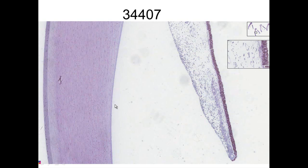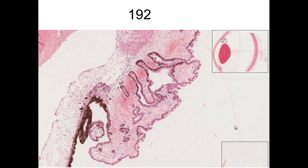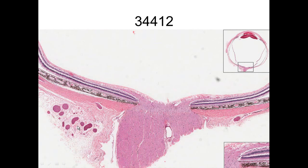The cornea has stratified squamous epithelium on the surface, followed by Bowman's membrane, Descemet's membrane, and endothelial cells at the bottom. The iris and lens are adjacent. Fluid produced at the ciliary processes goes around the pupil and is absorbed back at the canal of Schlemm region. At higher magnification we see the secretory portion and the canal of Schlemm where fluid is removed after passing through the trabecular meshwork.